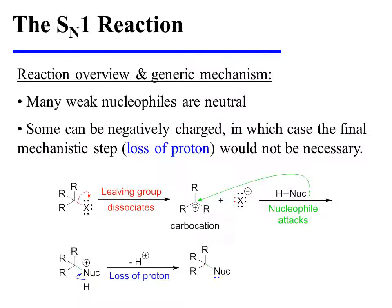While many weak nucleophiles are neutral, some may be negatively charged. If that is the case, then the final mechanistic step — the loss of a proton — would not be necessary.